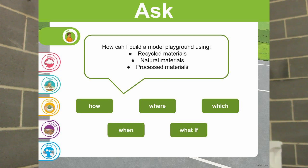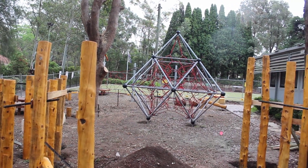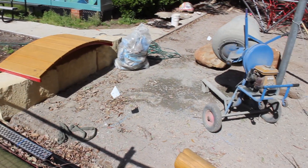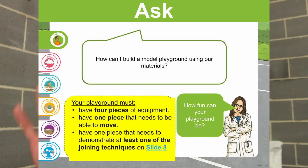Our first step is we're going to ask some questions. How could we build the playground out of different materials? Maybe we would use some natural, processed, or recycled materials — thinking about what type of things would be best for use in a playground. We're going to look through the different requirements for your playground: you need to have at least four pieces of equipment, one piece needs to be able to move — so that could be swings, or a seesaw, or various other kinds of equipment — and you need to use one joining technique from slide eight.